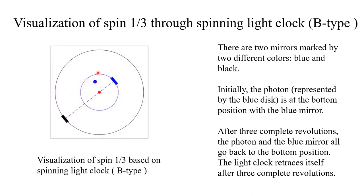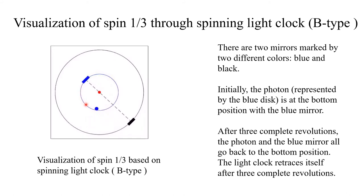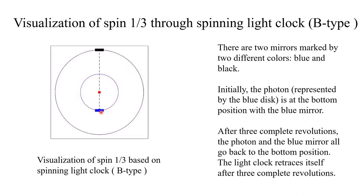After two and a half revolutions, we proceed to three complete revolutions. After three complete revolutions, the photon and the blue mirror all go back to the bottom position. The light clock retraces itself after three complete revolutions. This is spin 1 over 3.